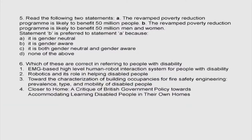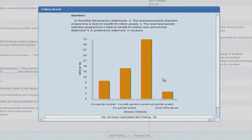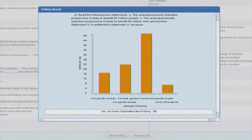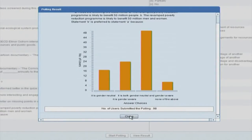Question 5 uses an audience poll. Statement A: 'The revamped poverty reduction program is likely to benefit 50 million people.' Statement B: 'The revamped poverty reduction program is likely to benefit 50 million men and women.' Statement B is preferred to A — the question is why. Is it gender neutral, gender aware, or both? Out of 98 responses, roughly half gave C — gender aware. The instructor confirms that is the correct answer, because it uses the way it refers to both men and women, and is aware that these benefits can be different for men and women.